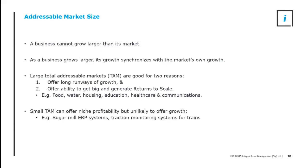Small addressable markets can still be attractive, but when the tree maxes out its growth, it's going to be a very small tree. Examples of small addressable markets are sugar mill ERP systems and traction monitoring systems for trains. All of these are needed — they are greatly profitable niches, and in fact each of these is currently listed on the JSE, though both are likely to be delisted soon. Both are profitable, both are great little businesses, but both are in very small addressable markets. They need to be bought by larger businesses and absorbed in order to get big.